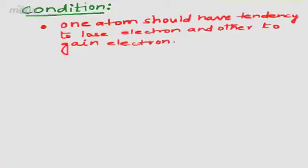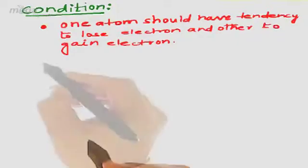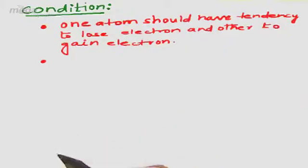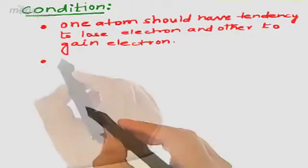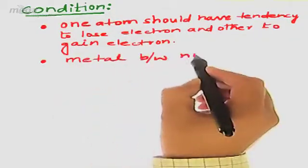Now we shall be moving ahead to the condition. Condition means what are the favourable conditions during which two atoms favour ionic bonding. So we shall be dealing with conditions for ionic bonding. An ionic bond can only be formed when one atom has a tendency to lose electrons while the other has a tendency to gain electrons. If an atom undergoes loss of electron, it should be a metal, and whenever an atom accepts electrons it has non-metallic behaviour. So it could be concluded that between a metal and a non-metal we can have ionic bonding.